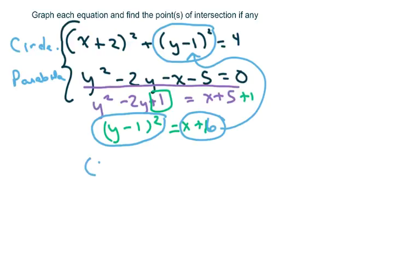So I have x plus 2 squared plus, and basically I'm copying this down, x plus 6 equals 4. And when you do that you're going to get x squared plus 4x plus 4 plus x plus 6.